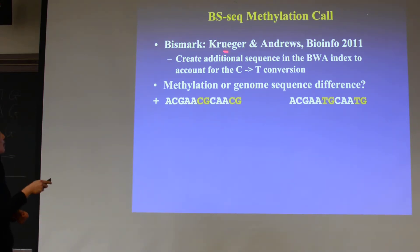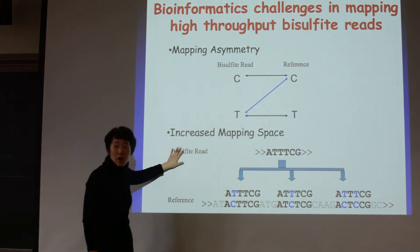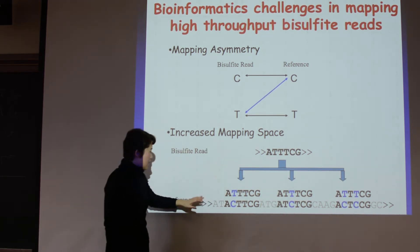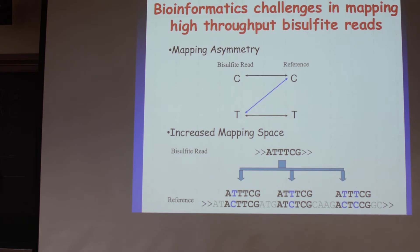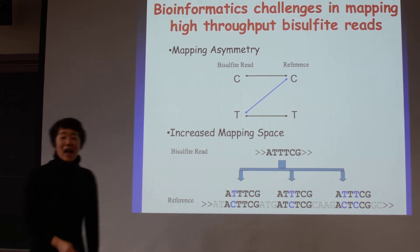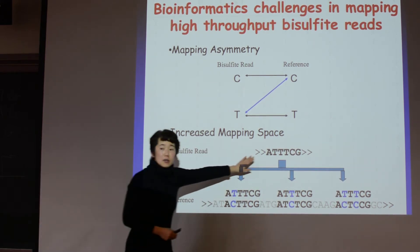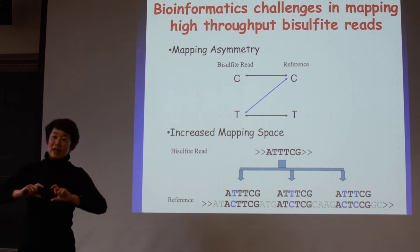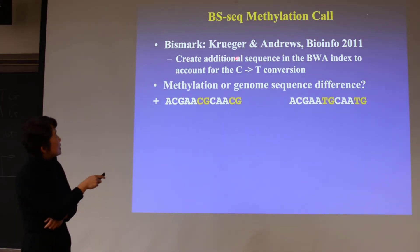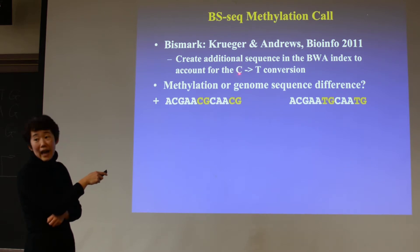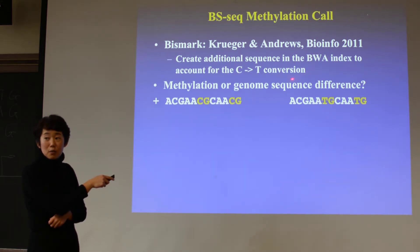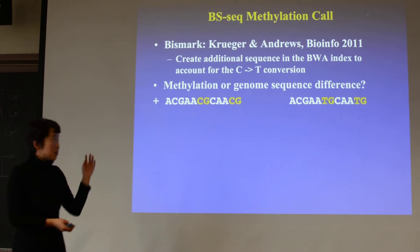There are algorithms to handle bisulfite mapping. One way is to convert the bisulfite read — changing all Ts back to Cs — and then map to the standard reference genome. Another possibility is to use your original sequence but convert the reference genome, making all Cs into Ts, and create an additional BWA reference genome index. Every time the reference genome has a C, you also make the index with it converted to T. Either way is okay, and you can proceed with the mapping.